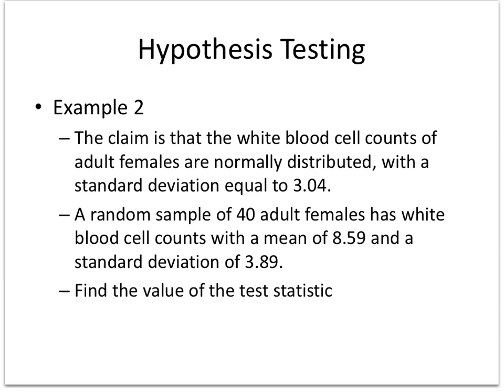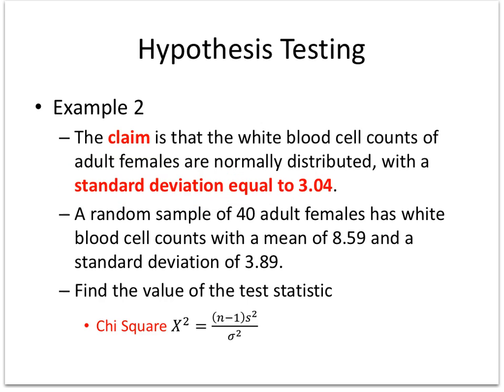All right, the claim is that white blood cell counts of adult females are normally distributed with a standard deviation equal to 3.04. A random sample of 40 adult females have white blood cell counts with a mean of 8.59 and a standard deviation of 3.89. Notice the population gives you the standard deviation—this is a chi-square test.